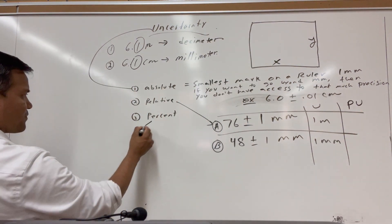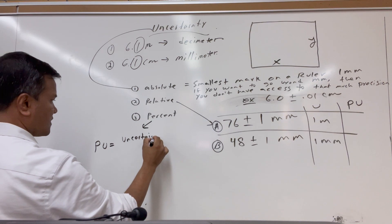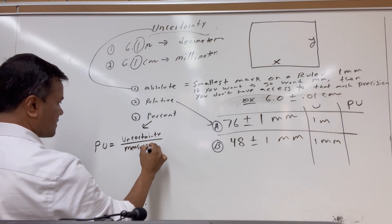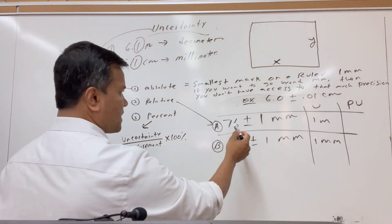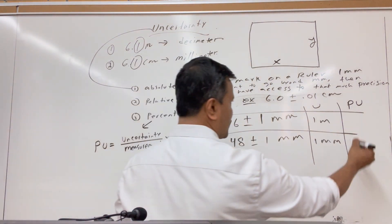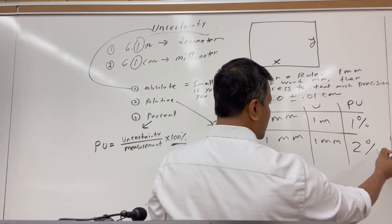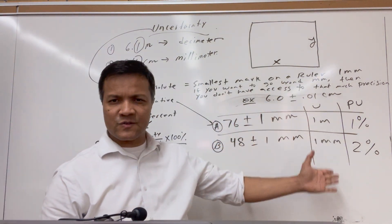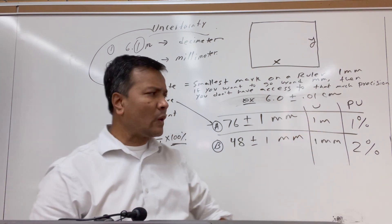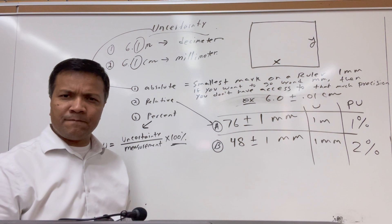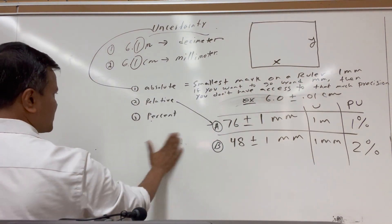So you need percent uncertainty. Percent uncertainty is: uncertainty divided by measurement, times 100%. For 76 ± 1 mm: 1 divided by 76 times 100% is about 1%. For 48 ± 1 mm: 1 divided by 48 times 100% is about 2%. Although the absolute uncertainties are the same, the percent uncertainties are not. So percent uncertainty is very useful. Relative uncertainty applies when you are dealing with more than one data point.